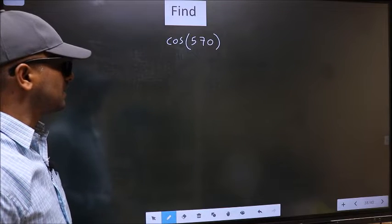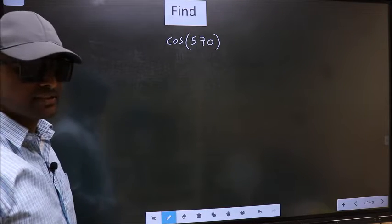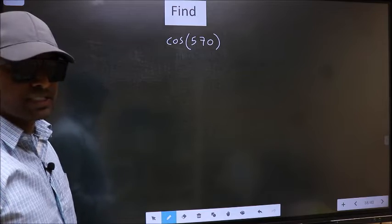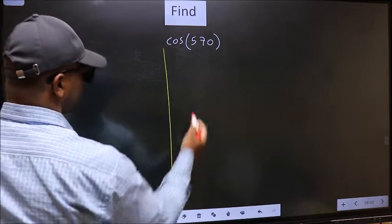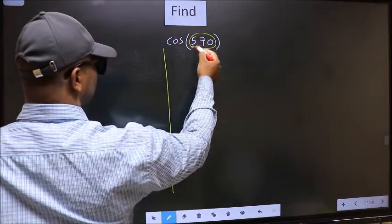Find cos 570. To find this, we should follow this method. See, here we have 570.